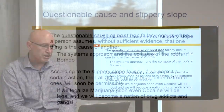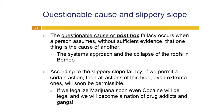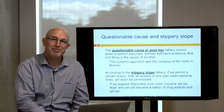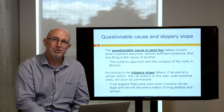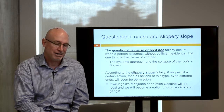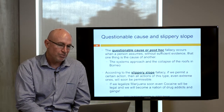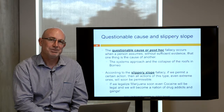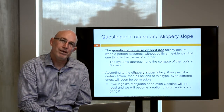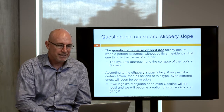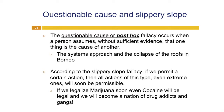The questionable cause fallacy occurs when a person assumes without sufficient evidence that one thing is the cause of another. For example, people thought the roofs in Borneo were collapsing because they were poorly made, but there was actually a whole different reason. We need to be careful that what we think is the cause is actually seldom the cause. Then there's the slippery slope fallacy: if we permit a certain action, then all actions of this type, even extreme ones, will soon be permissible. For example: if we legalize marijuana, soon even cocaine will be legal and we will become a nation of drug addicts and gangs.